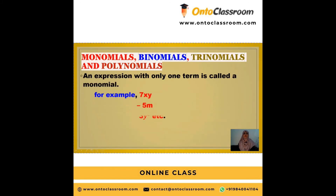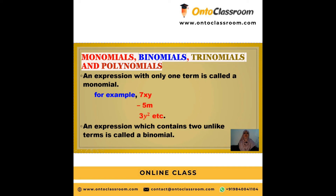What are monomials, binomials, trinomials, and polynomials? Mono means 1, bi means 2, tri means 3, and poly means many. An expression with only one term is called a monomial. For example, 7xy is considered one term — 7 is a constant, x and y are variables, and since it is a product, the whole thing is one term. These are a few examples of monomials.